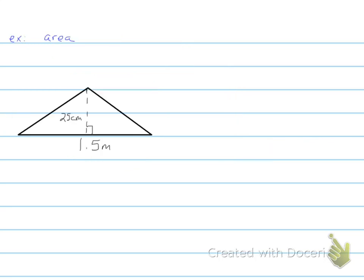Our next example is on area, and I set here a triangle, and it has a height of 25 centimeters and a base of 1.5 meters. Now remember the formula is base times height divided by 2. So we want to convert this into centimeters because, again, it's just easier to do so. And if we go back to our formula chart, we can tell that there are 100 centimeters in 1 meter.